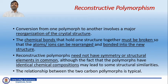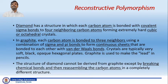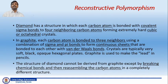In reconstructive polymorphs, they need not have symmetry or structural elements in common, although the fact that polymorphs have identical chemical composition may in turn lead to some structural similarities. The relationship between the two carbon polymorphs is a typical example for reconstructive polymorphism. The examples are diamond and graphite, both having the same composition — carbon. Diamond has a structure in which each carbon atom is bonded with covalent sigma bonds to four neighboring carbon atoms, forming extremely hard cubic or octahedral crystals. Whereas in graphite, each carbon atom is bonded to three neighbors using a combination of sigma and pi bonds to form continuous sheets that are bonded to each other with Van der Waals bonds.